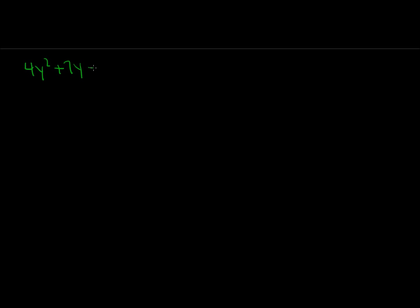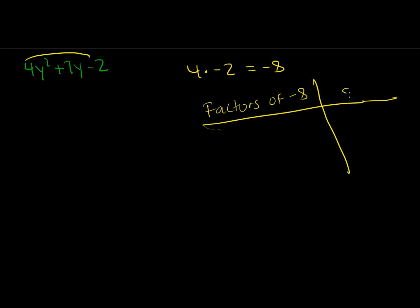Let's look at another example of factoring ax squared plus bx plus c when c is negative. Our example is 4y squared plus 7y minus 2. We start by multiplying a times c: 4 times negative 2 gives us negative 8. We want factors of negative 8 that add up to positive 7. Negative 1 and 8 work because negative 1 times 8 equals negative 8, and negative 1 plus 8 equals 7.